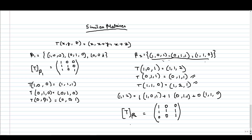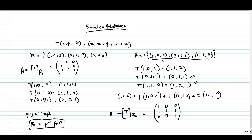These two matrices are similar. Let us denote the first matrix as A and the second as B. For similar matrices A and B, there exists some P such that B = P⁻¹AP (equivalently, PBP⁻¹ = A). We want to find this P.